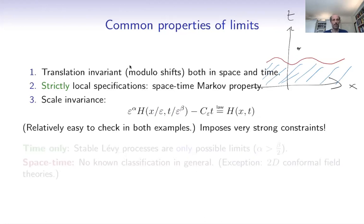And of course, since they were built as scaling limits, they should themselves be scaling invariant. These processes in both cases satisfy exact scaling variance.